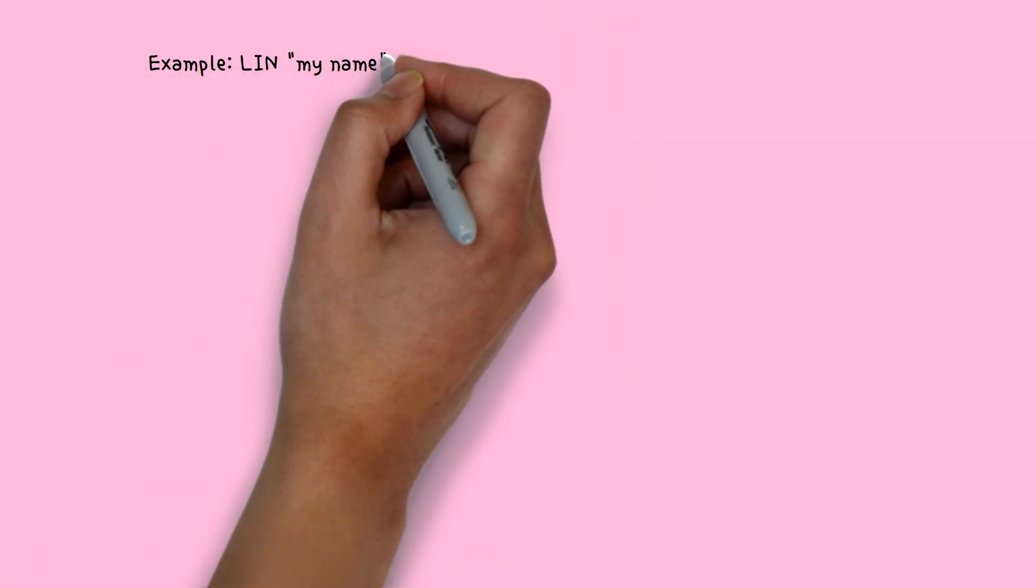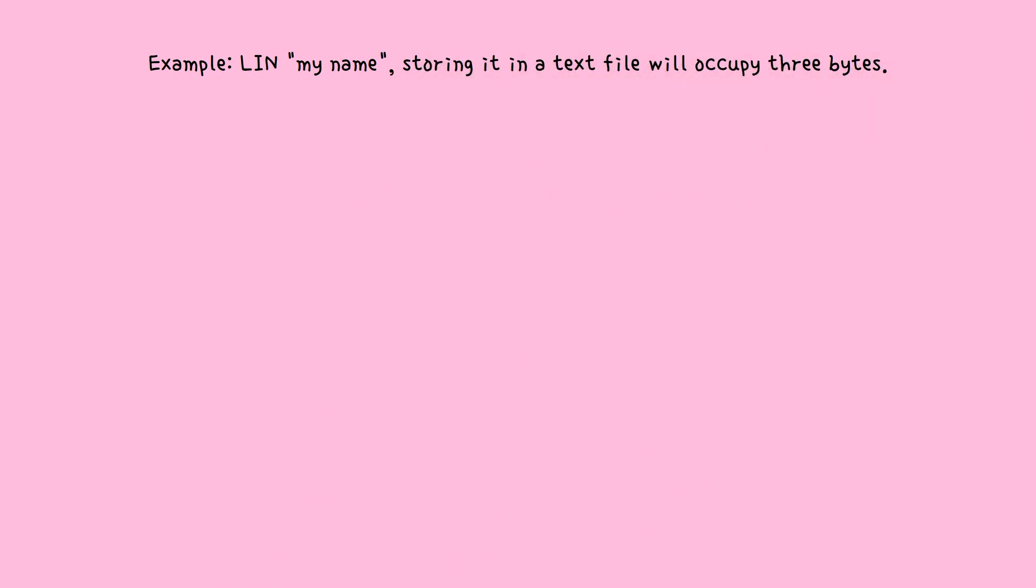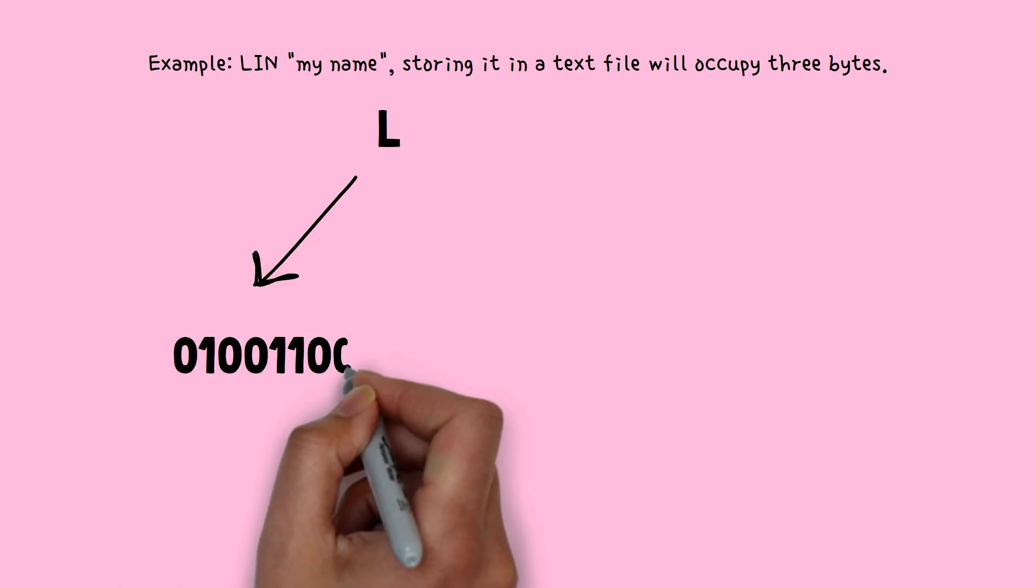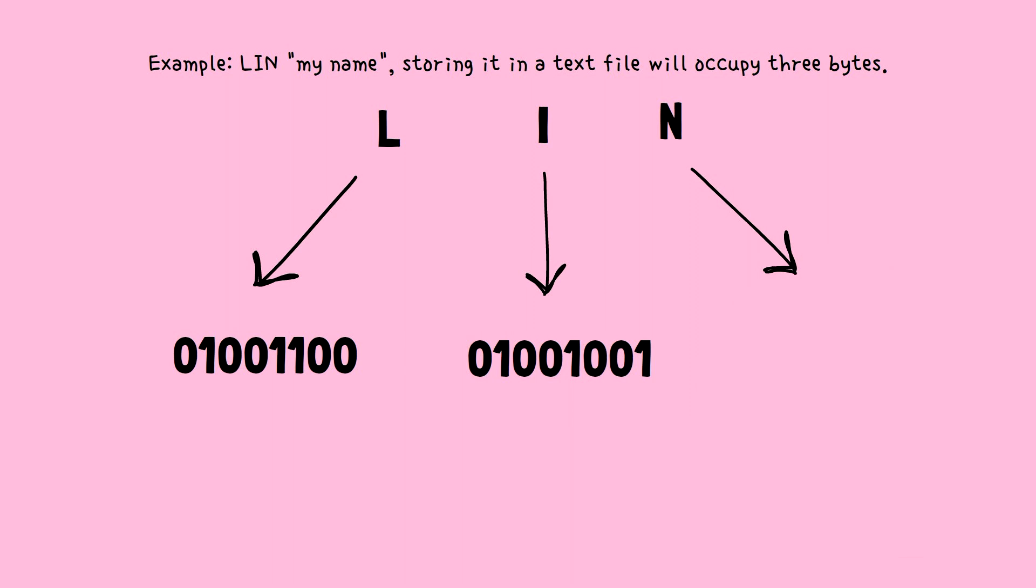Now let me give you an interesting example. Lynn, my name, storing it in a text file will occupy three bytes, like so. Each letter contains eight bits: L, I, N. Really interesting, right?